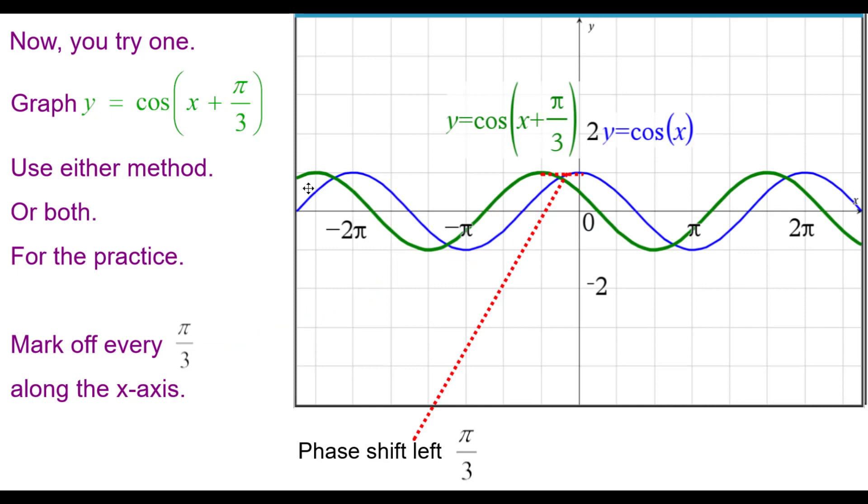And so our graph is in green here. You can see there's our phase shift left pi over 3 from blue to green going back pi over 3.